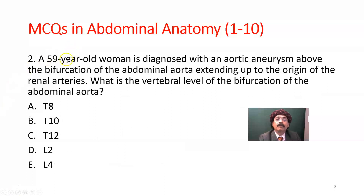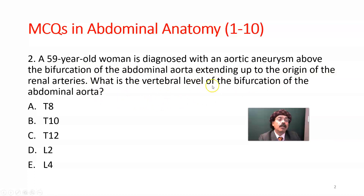Question number two: A 59-year-old woman is diagnosed with an aortic aneurysm above the bifurcation of the abdominal aorta, extending up to the origin of the renal arteries. What is the vertebral level of bifurcation of the abdominal aorta? Options: T8, T10, T12, L2, or L4.